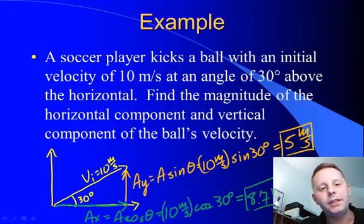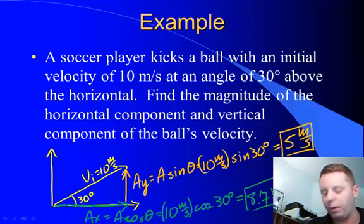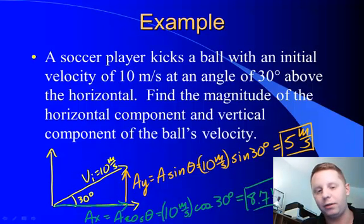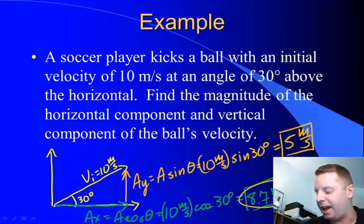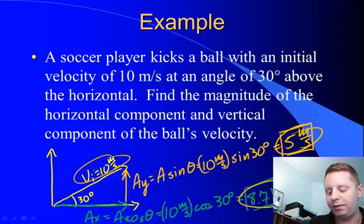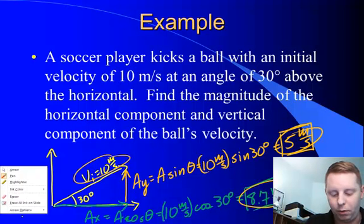And if we look at this, just to see if this makes sense, we can see that our x component is bigger than our y. That makes sense. The green vector on our drawing is bigger than the orange vector. And we could even check this out using the Pythagorean theorem. a squared plus b squared equals our hypotenuse squared, right? So if we took 8.7 squared, added it to 5 squared, we should come up with 10 squared, which would be 100.